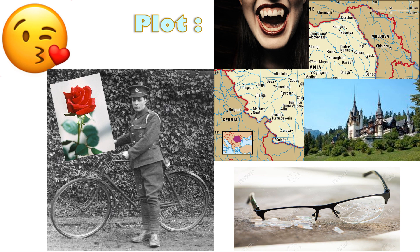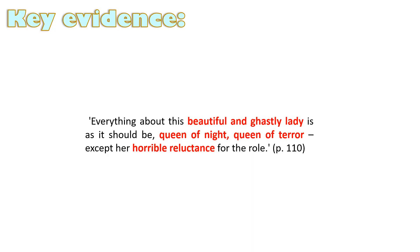In our analysis I want to be unpacking the virtue of the soldier, but it makes sense to begin by examining the countess — the vampire herself. This first piece of evidence examining her grotesque qualities is fantastic in illustrating Carter's subversion. Everything about this beautiful and ghastly lady is as it should be: Queen of Night, Queen of Terror — except for her horrible reluctance for the role. Carter subverts the gothic by creating a monster who is reluctant to be so. We're given that beautiful juxtaposition of the perpetual struggle of this lady being beautiful yet acting in a ghastly fashion as a consequence of that.